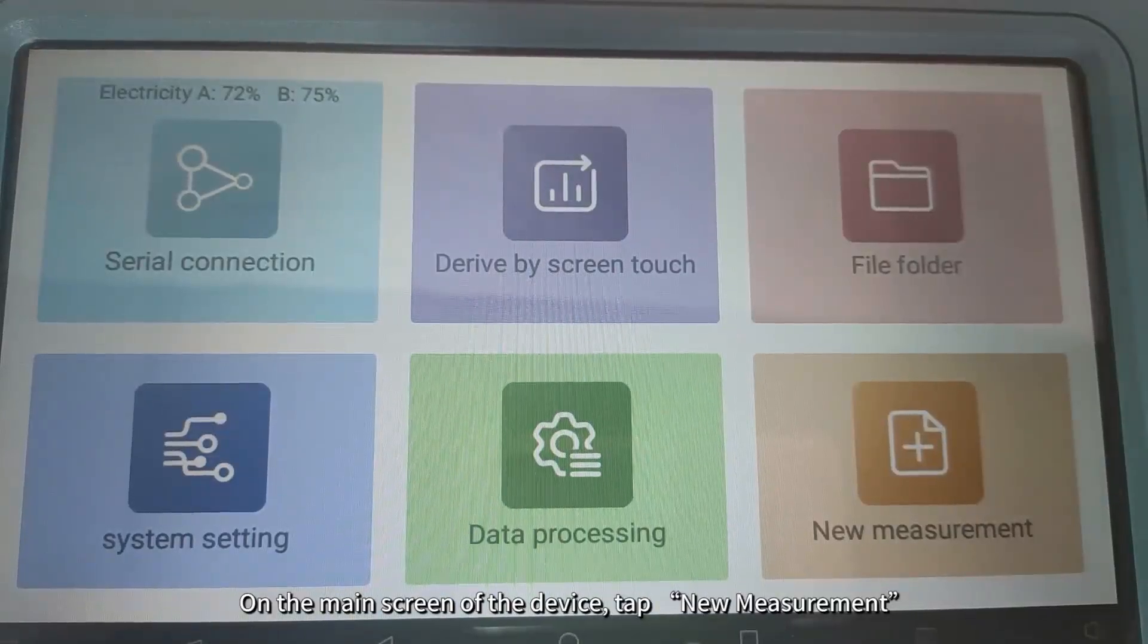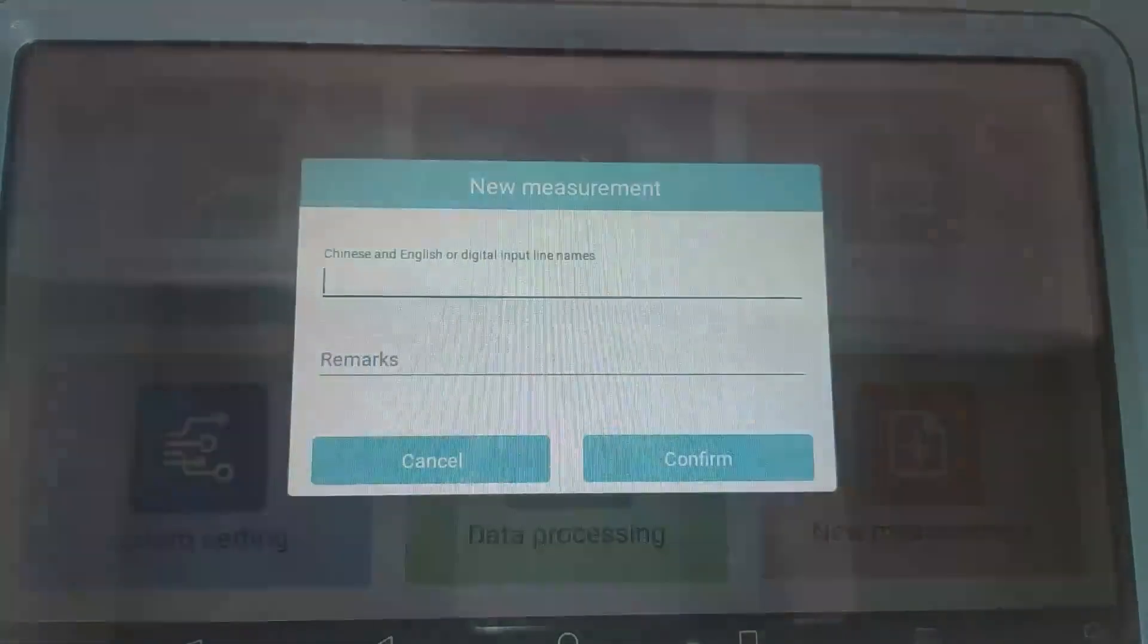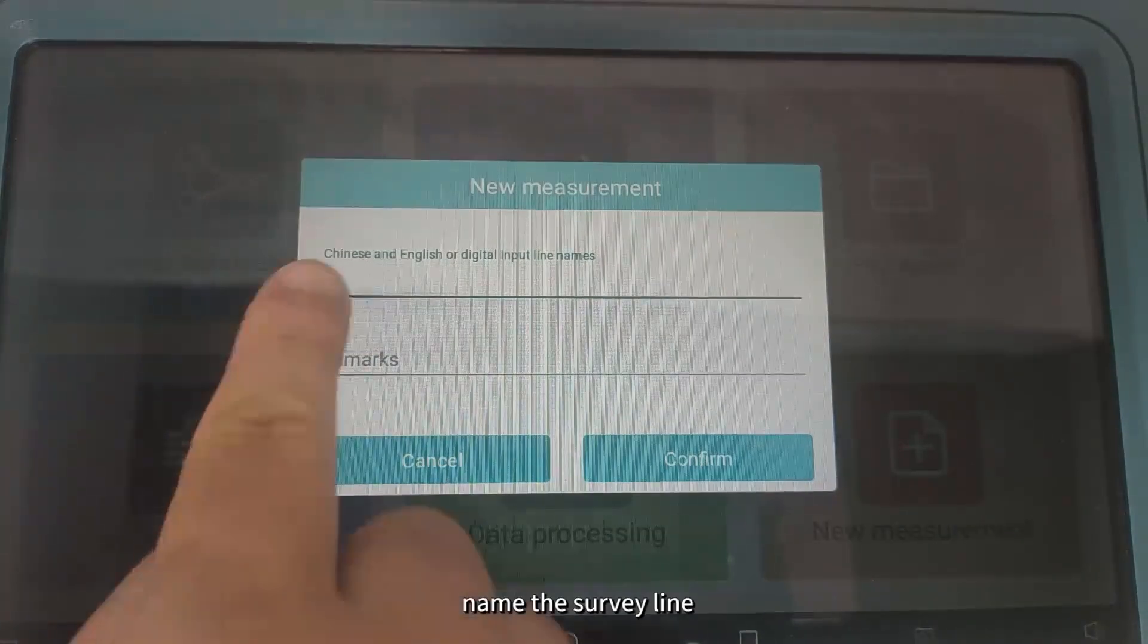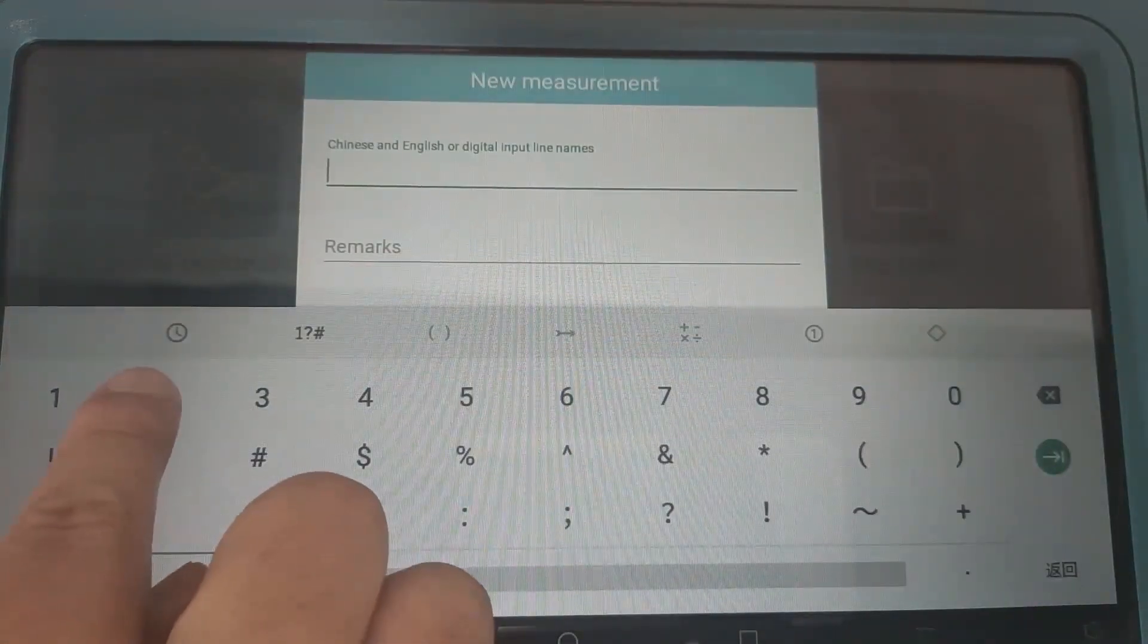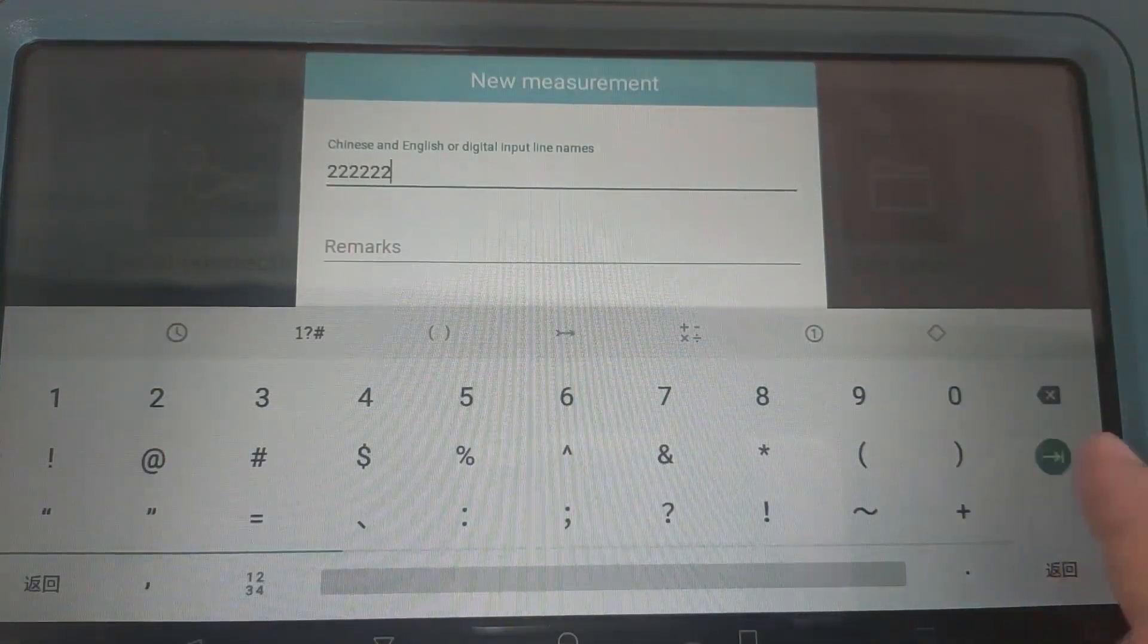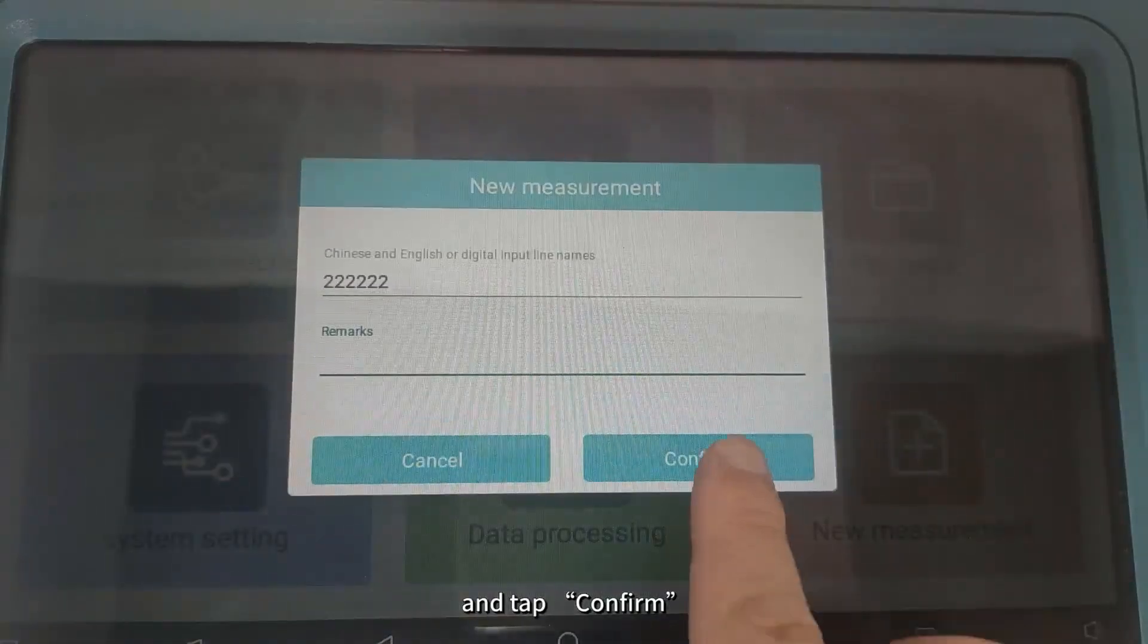On the main screen of the device, tap New Measurement, name the survey line, and tap Confirm.